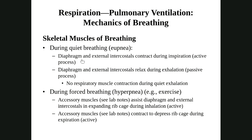The external intercostals provide the other 25-30% of volume change by lifting the ribs. These two muscles — diaphragm and external intercostals — are only active during inhalation during quiet breathing. During exhalation, these muscles relax. The elastic fibers recoil and force the air out of the lungs — just like elastic rebound in blood vessels. So exhalation during eupnea or quiet breathing is a passive process, saving us energy. No muscles contract to cause exhalation.